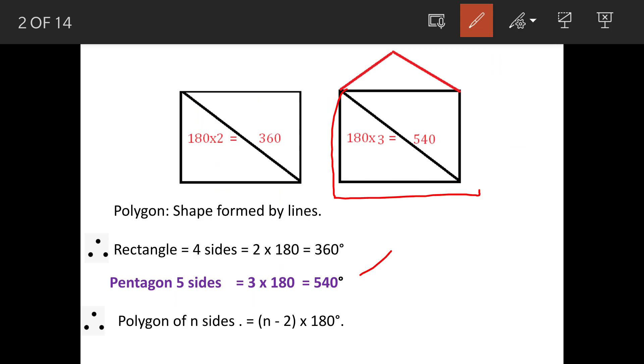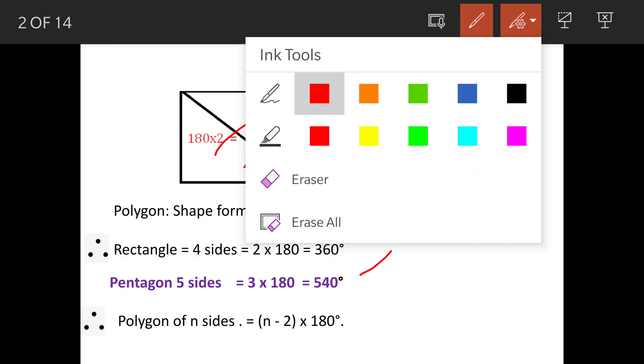One, two, three, four, and five, these are the five sides of pentagon. This line is actually has been drawn just to indicate the number of triangles.